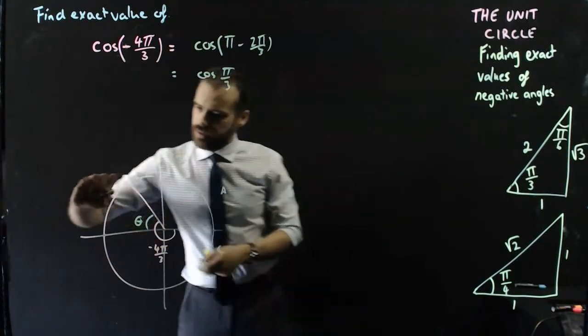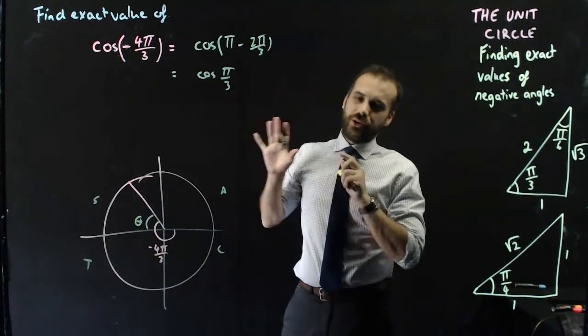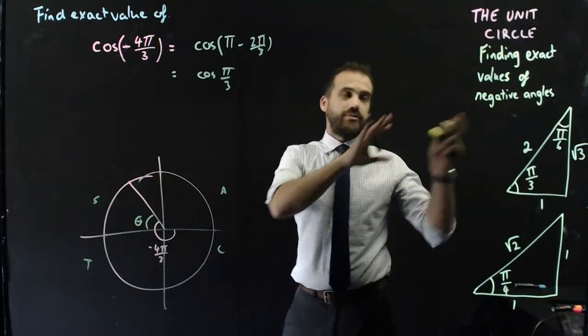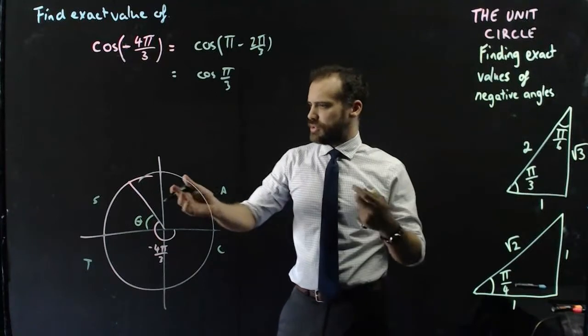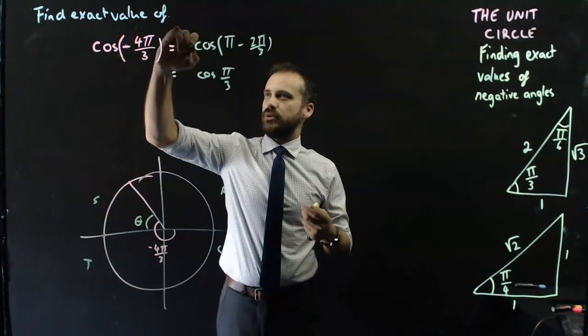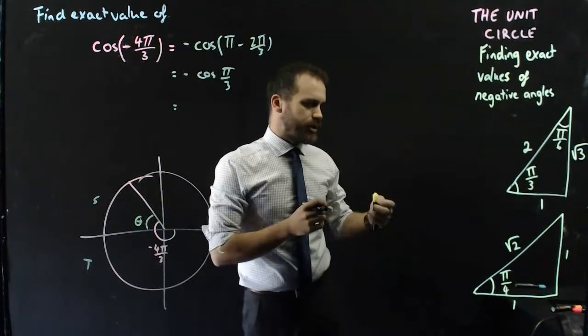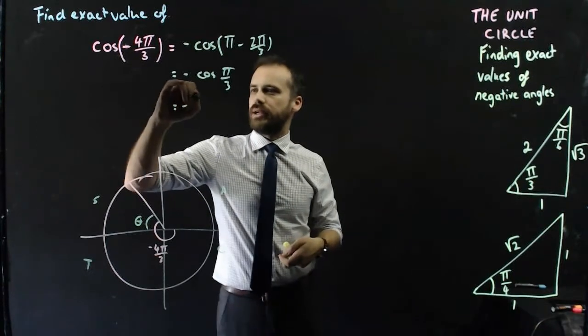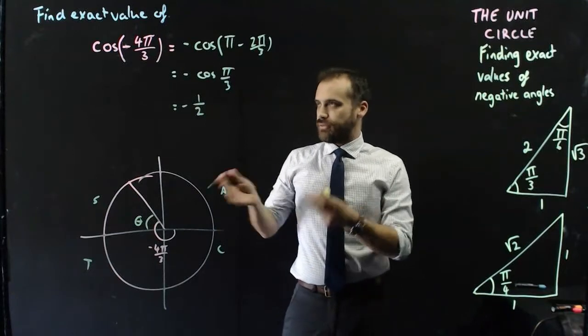Now, C, A, S, T. That negative has no bearing on this step. Once we've actually identified the angle, we're done with the difference in this question with negative angles. So, we can just say, well, we're in the S quadrant, but it's a cosine question, so it must be negative. And then we go over here, π/3, cosine, so adjacent over hypotenuse, 1/2. But it's negative. So, negative 1/2 for that question.